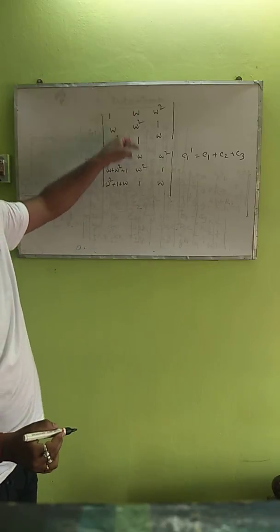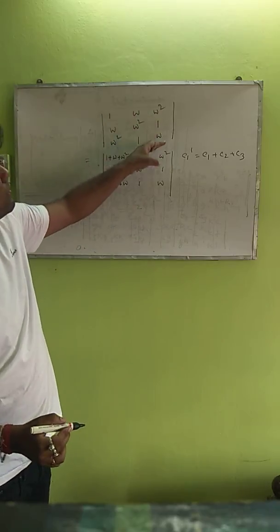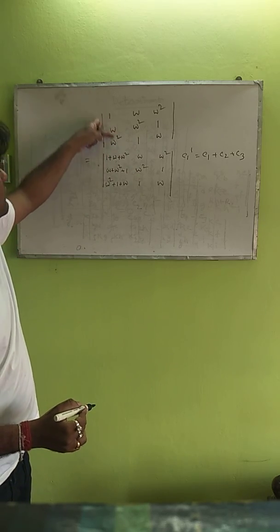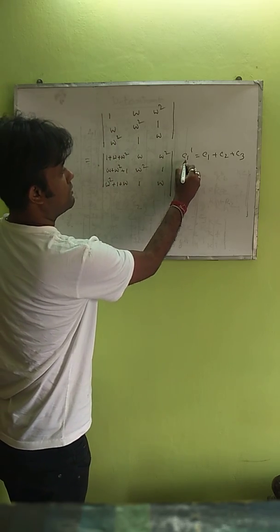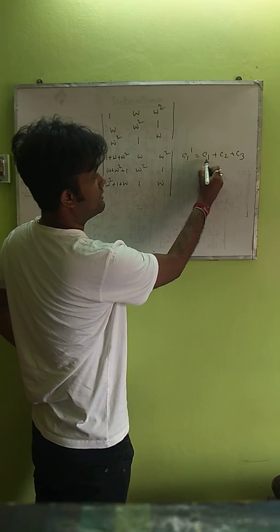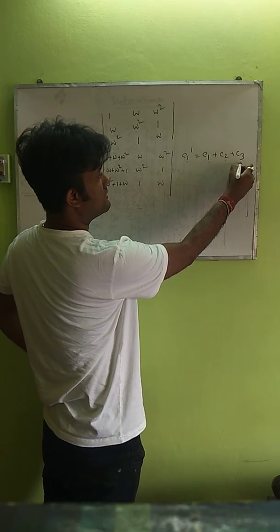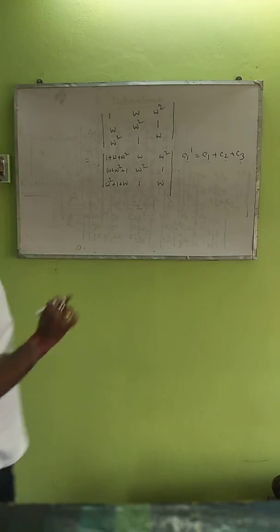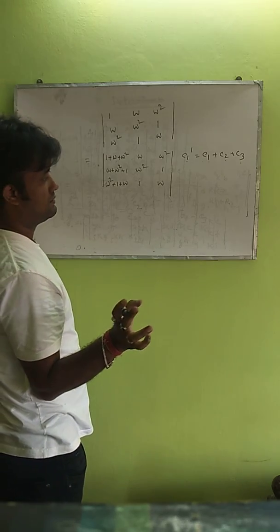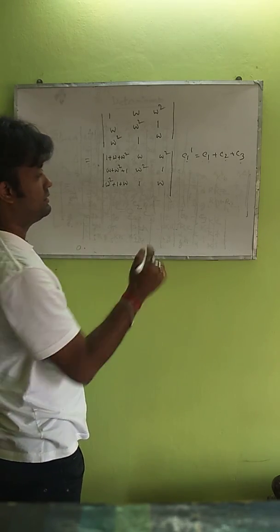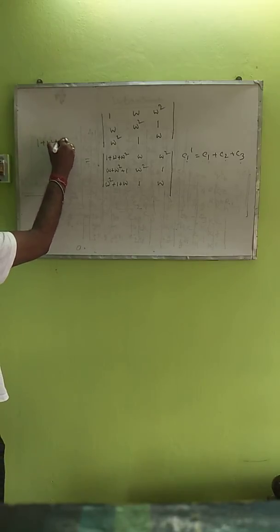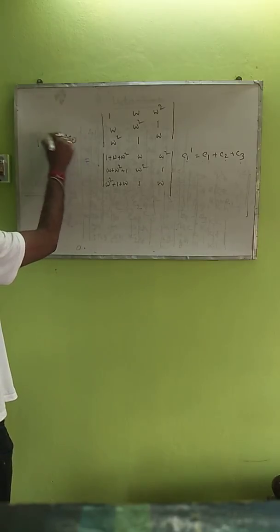These two columns remain unchanged, but we change only C1. So C1' = C1 + C2 + C3, only C1 will be changed. From the previous class on complex numbers, you know that 1 + ω + ω² = 0.